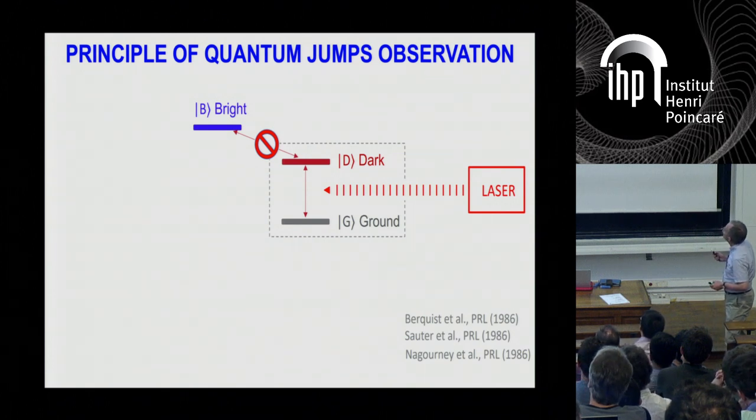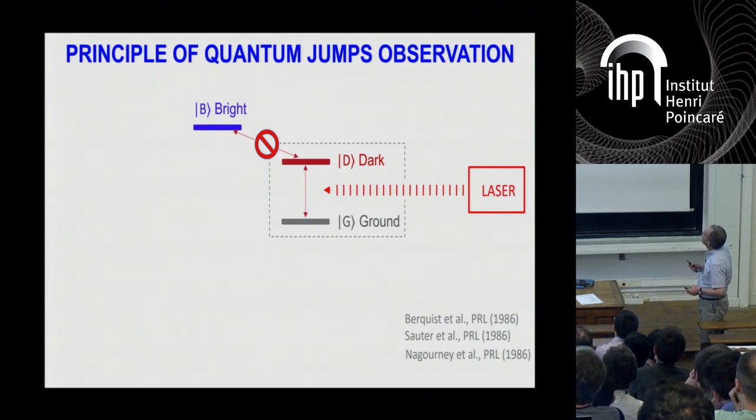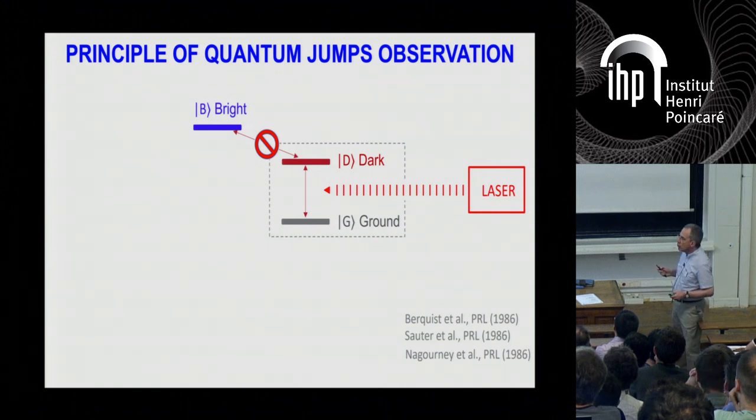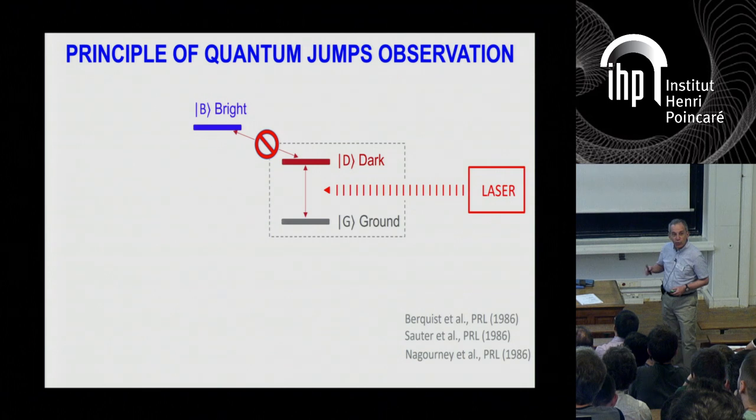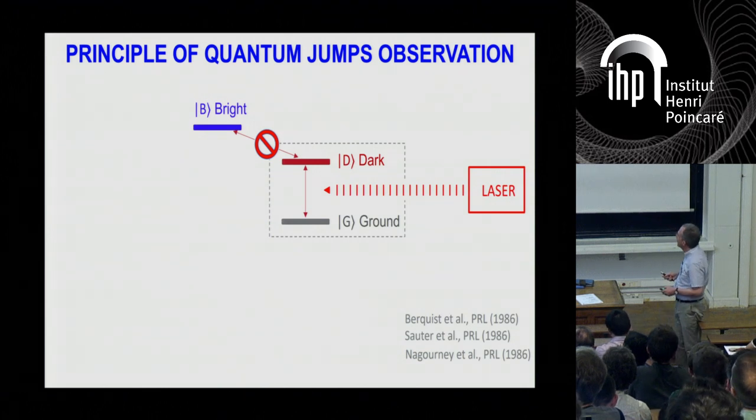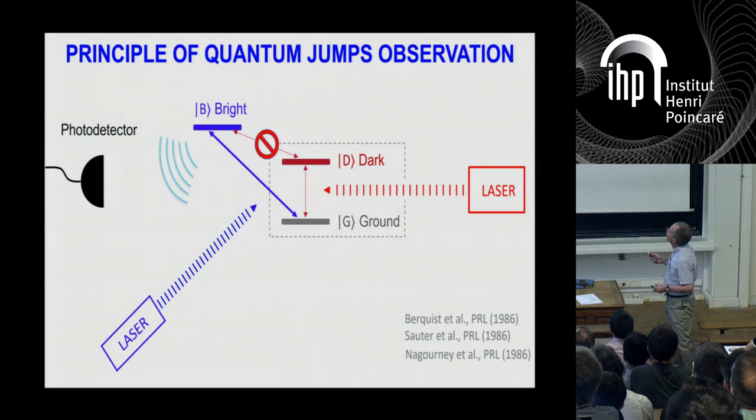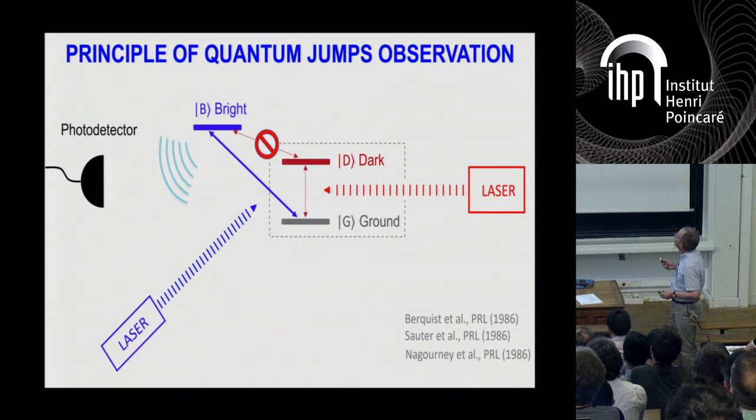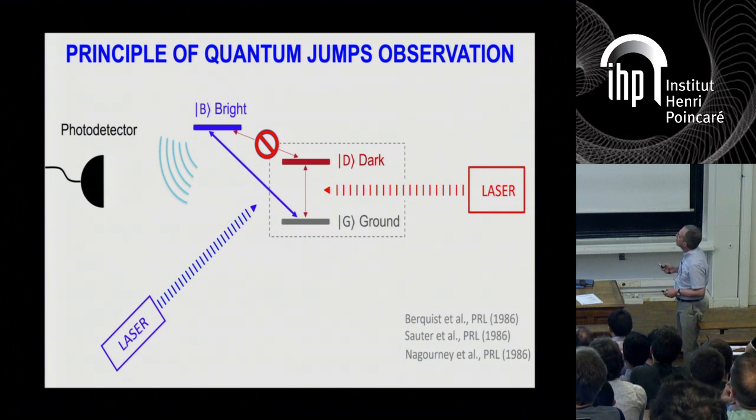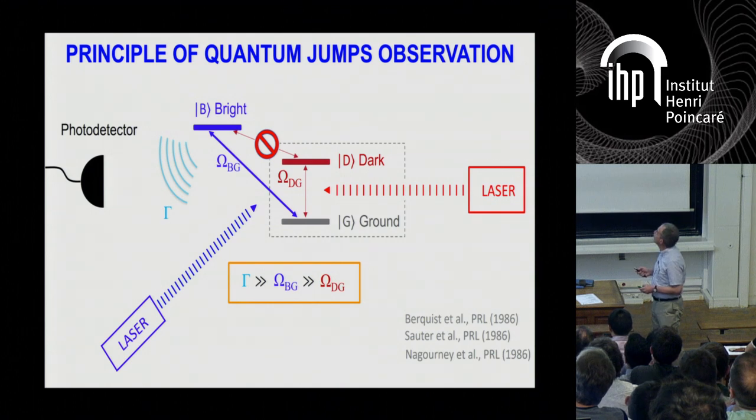So this is the principle of the experiment. You want to drive this transition, a very weak transition, with a laser, a very strong laser, but the transition is very weak. And you want to detect whether the atom is in the ground or the dark state, basically whether you have been successful in Rabi-flopping the atom. And what you do is that you have a second laser which drives this transition, a strong transition between the ground and the bright state. And this bright state returns to the system in the bright state returns to the ground state by emitting a fluorescent photon, which you collect with the photodetector. This constitutes a cycling transition, which is very fast.